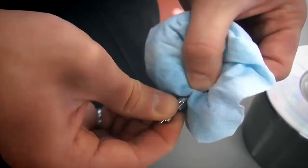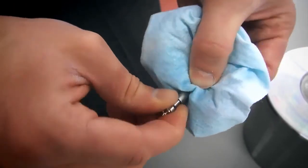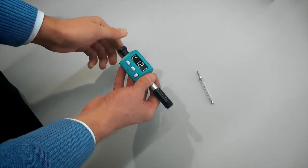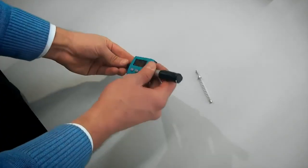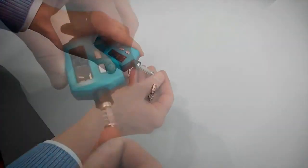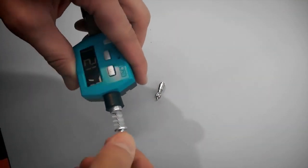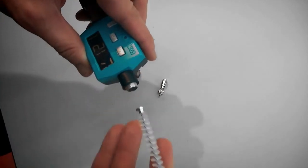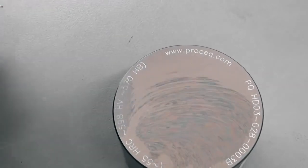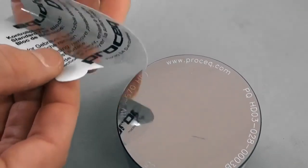To ensure proper functioning of the instrument, please clean the impact body regularly with isopropanol or acetone. It is also recommended to use the supplied brush to clean the impact device. In addition, have the device calibrated by an authorized ProSec service center once a year. Please make sure to keep the test block clean. Put the sticker back on after you have finished measuring.